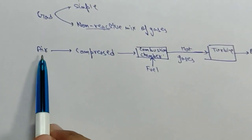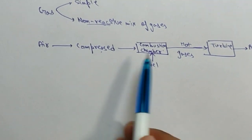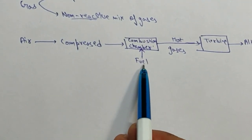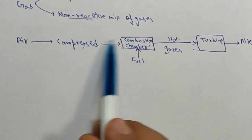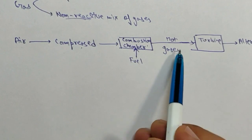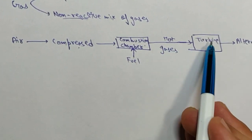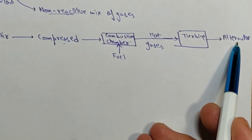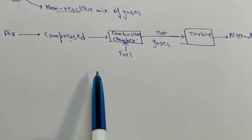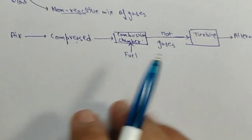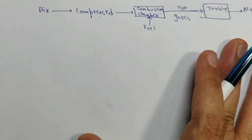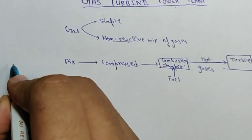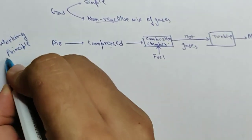So the basic working principle is: air is first compressed, then it is sent to the combustion chamber where the burning of fuel converts the air into hot gases. These hot gases are used to move the turbine, which in turn drives the alternator and produces electricity. Now I will discuss the layout of this plant.